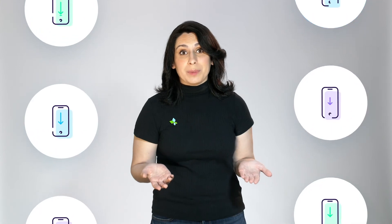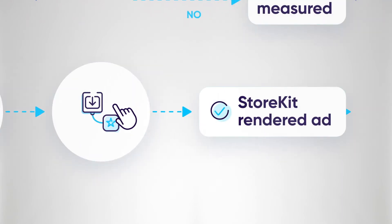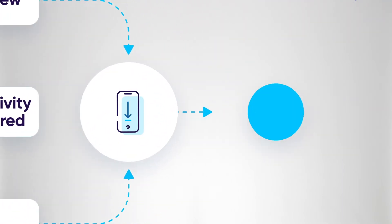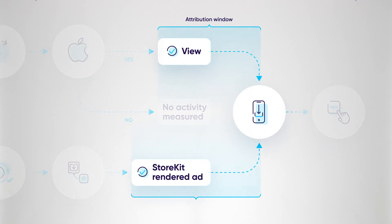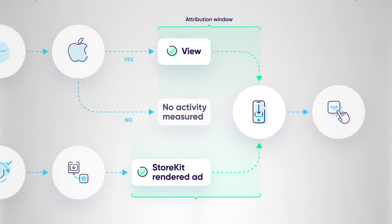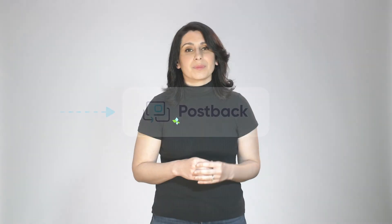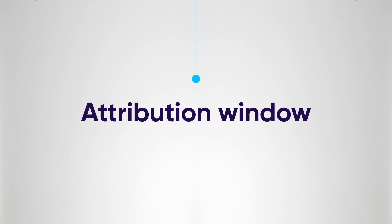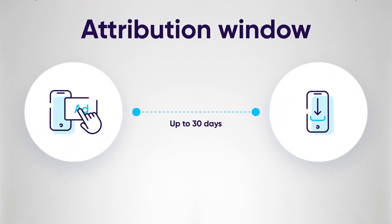The next step would hopefully be for the user to download the advertised app, since that is ultimately the whole goal of all of this. In StoreKit-rendered ads, the user can download the app right then and there. If the user installs the app and launches it within the SKAdNetwork attribution window, the install is attributed to the ad network, and the device sends the install postback to the ad network. For SKAdNetwork, the attribution window can be up to 30 days between click and install, depending on the ad type.